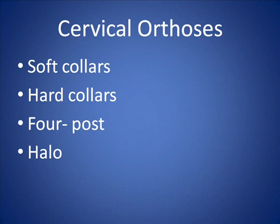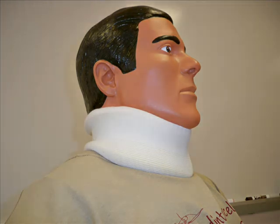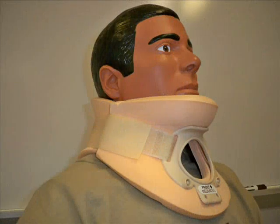Cervical orthoses, like trunk orthoses, can vary from soft types that offer support but not true immobilization all the way to complete immobilization. Please check the pictures of the four-post orthoses and halo orthoses in the textbook. Phil is modeling a soft cervical collar — a stockinette-wrapped foam contoured to fit the neck, fastening with Velcro at the back. It gives the neck some support to allow the muscles to relax, but it would not stop all neck motion. A hard collar, also called a Philadelphia collar, is bivalve and fastens with Velcro on both sides.